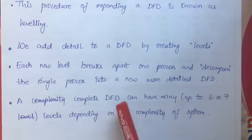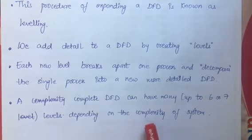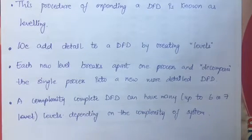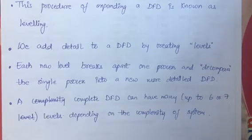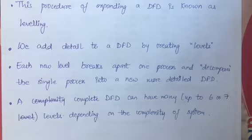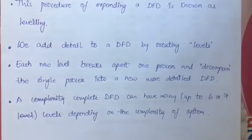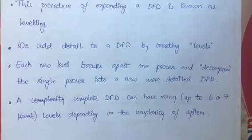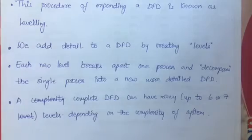In DFD, we can have more than 6 to 7 levels, depending on the complexity of your system. Meaning your system is so complex, depending on how many more functions there are — you can have 6 or 7 levels.